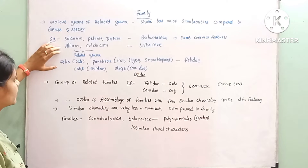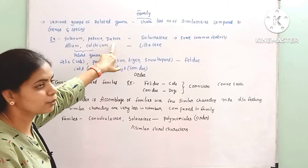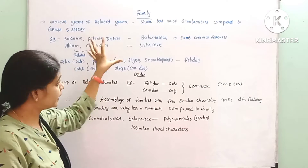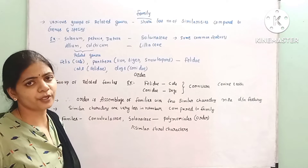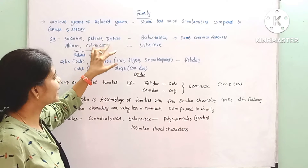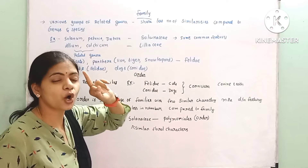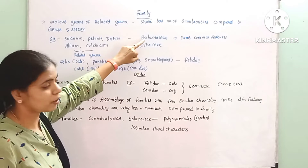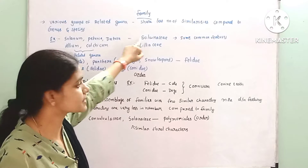For example, Solanum, Petunia, and Datura are three different genera. Depending upon vegetative or reproductive characters, these three will be kept under one common family. The family they belong to is Solanaceae.